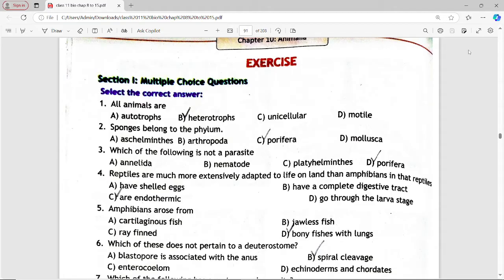Next is: which of the following is not a parasite? Options are Annelida, Nematode, Platyhelminthes, Porifera. Answer is option D, Porifera.